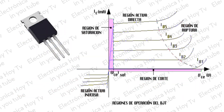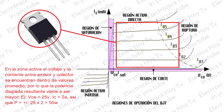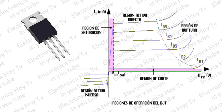Esto es posible puesto que en estos casos, los transistores de potencia no trabajan en su zona activa, como sí se hace con la amplificación tradicional tipo AB, por ejemplo, disipando con ello calor junto con la señal amplificada. Sino que en este caso de la amplificación tipo D, los transistores trabajan en el modo de corte y saturación, es decir, conectando y desconectando, como sucede con un interruptor.